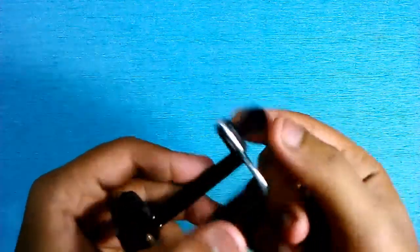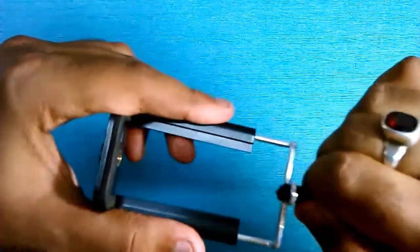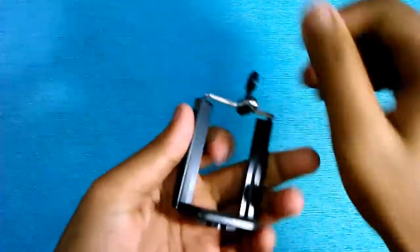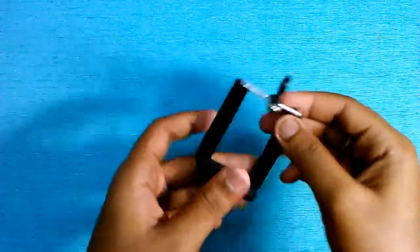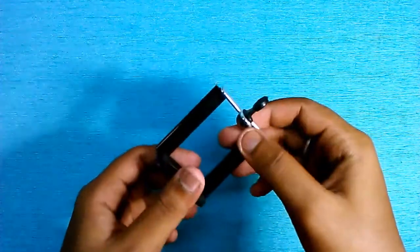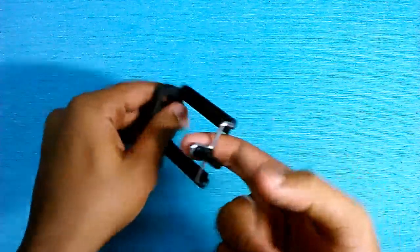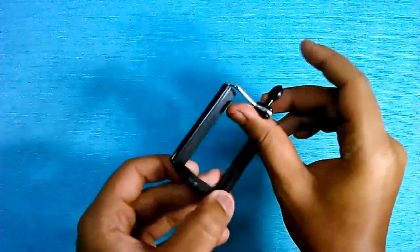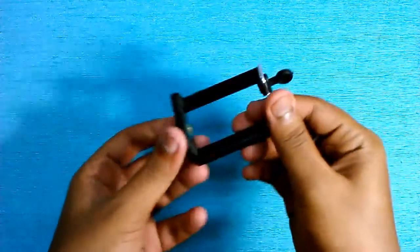This small thing is for pulling it like this. You can stretch it and mount any mobile here. You can mount any mobile between 55 to 85 millimeters. The stretchable height is 85 millimeters and the smallest height is 55 millimeters.